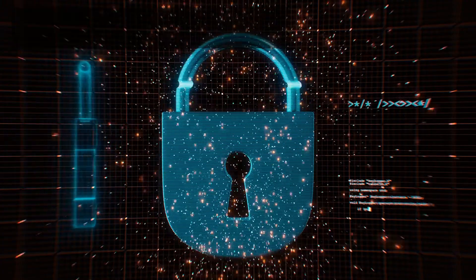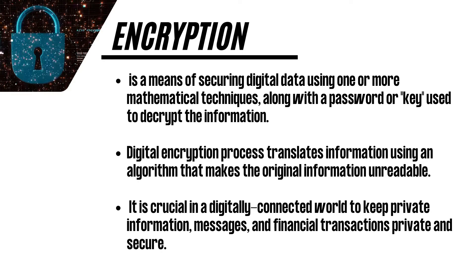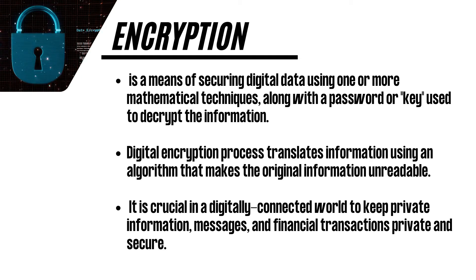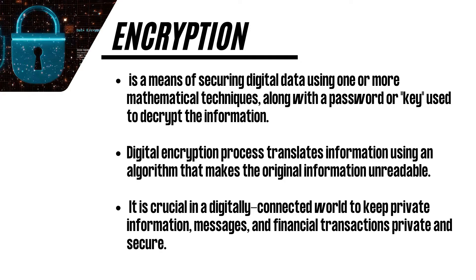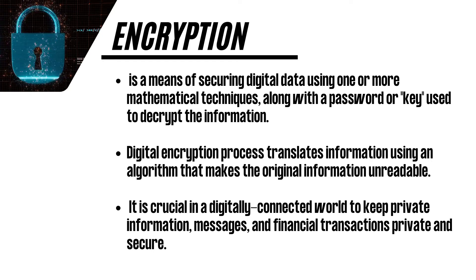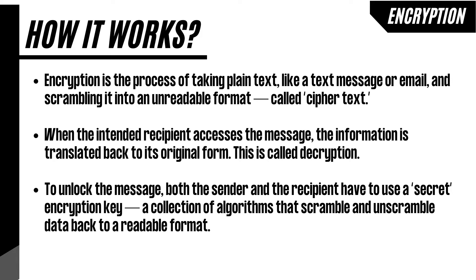Encryption is a means of securing digital data using one or more mathematical techniques, along with a password or key used to decrypt the information. The digital encryption process translates information using an algorithm that makes the original information unreadable. It is crucial in a digitally connected world to keep private information, messages, and financial transactions private and secure. Encryption is the process of taking plain text, like a text message or email, and scrambling it into an unreadable format called ciphertext. This helps protect the confidentiality of digital data either stored on computer systems or transmitted through a network like the internet. When the intended recipient accesses the message, the information is translated back to its original form. This is called decryption.